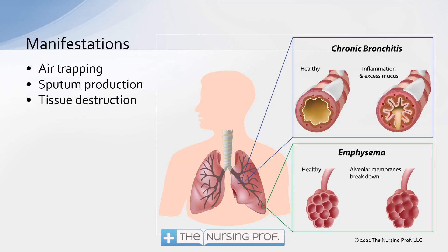We also have the production of sputum. There are two main things happening in COPD. A patient may be diagnosed with emphysema or with chronic bronchitis, but patients with COPD have both processes going on: lung destruction, which is the emphysema part, and chronic bronchitis, which is the chronic mucus production part. One may be more prominent than the other in a particular patient, but they're going to have both.